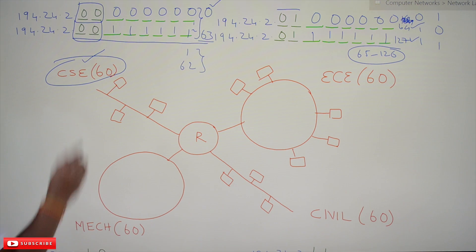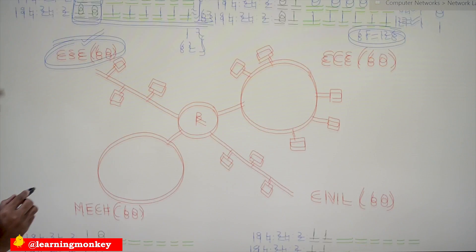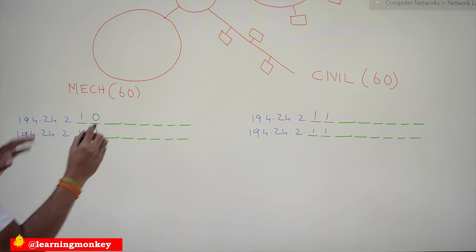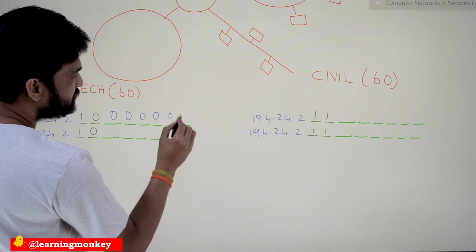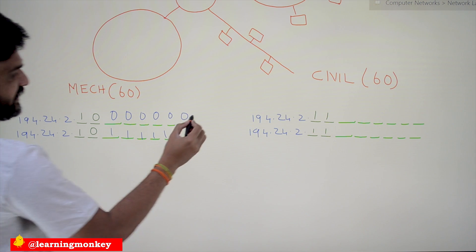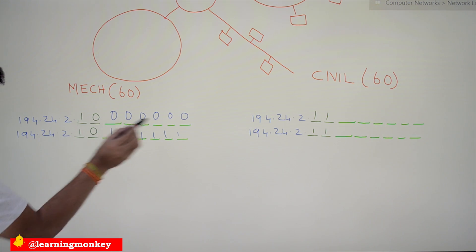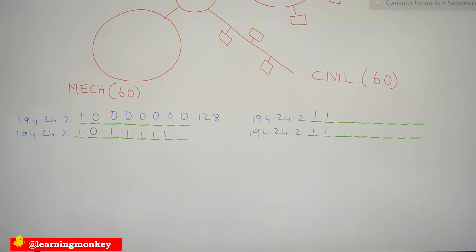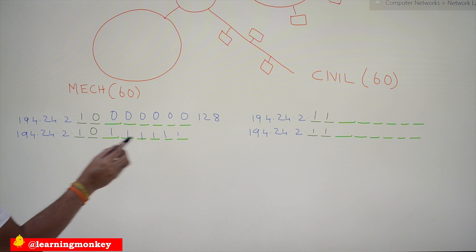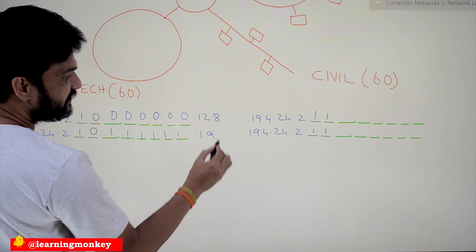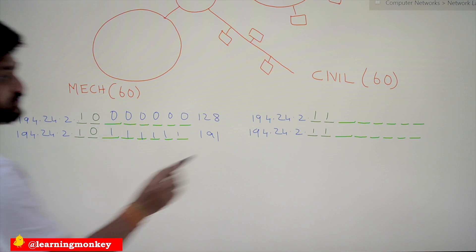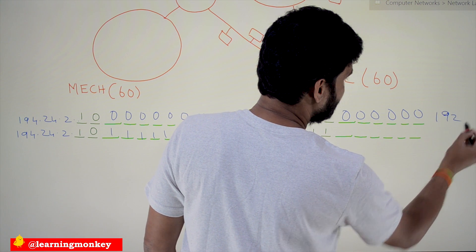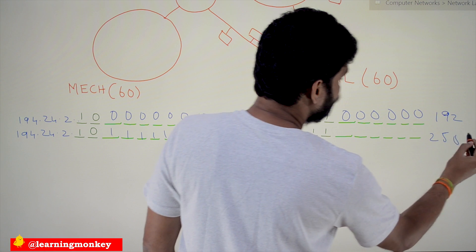For Mechanical, the third department, the subnet code is 10. Starting with 10 followed by six zeros gives 128, and 10 followed by six ones gives 191. So the Mechanical subnet range is 194.24.2.128 to 194.24.2.191. The Civil department uses subnet code 11, giving a range of 194.24.2.192 to 194.24.2.255.